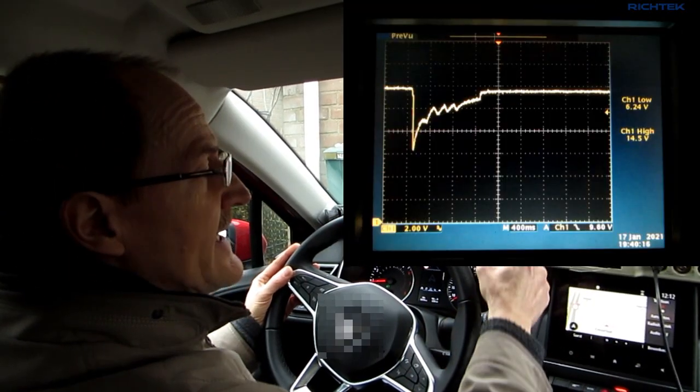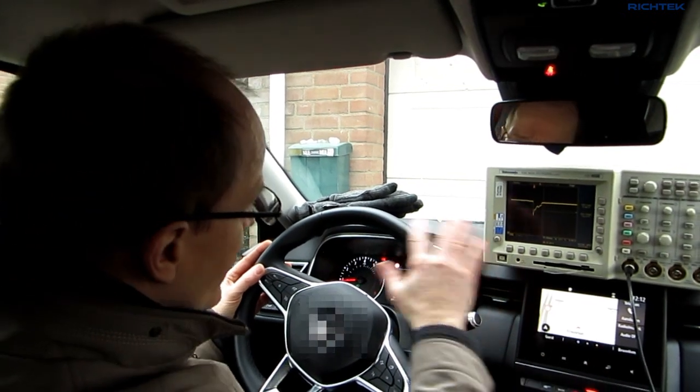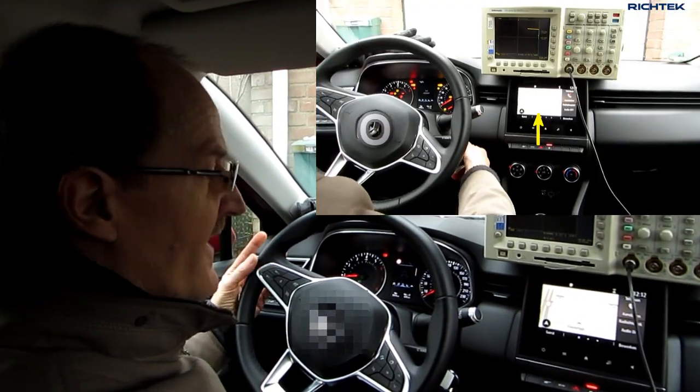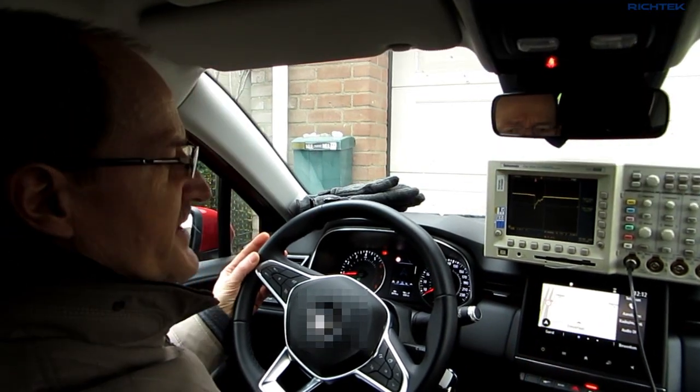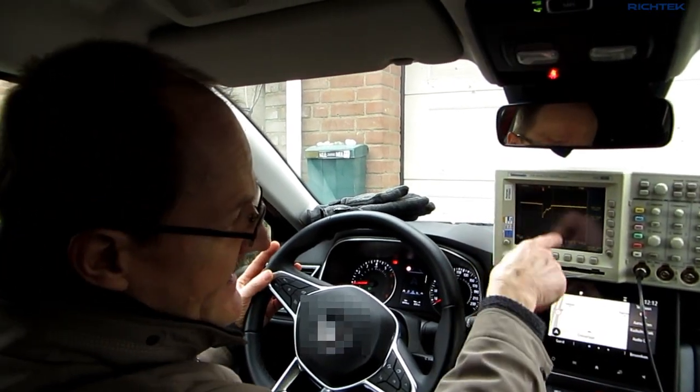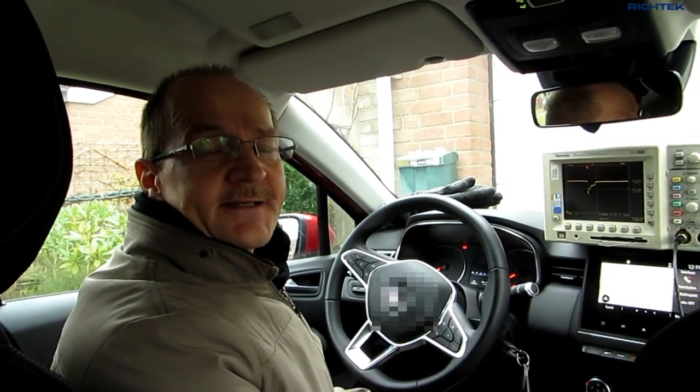What you see here is a typical cold crank battery voltage profile. All the other electronics seem to be working fine during the cold cranking. This is because all these electronics have been designed to cope with these kind of voltage fluctuations. Let's go back to the lab where it's nice and warm and I will explain you more about automotive electronic circuit design.